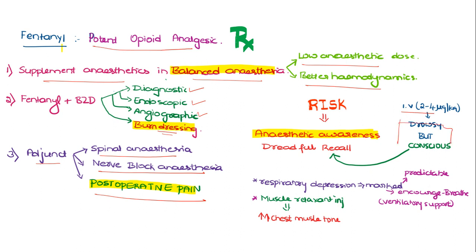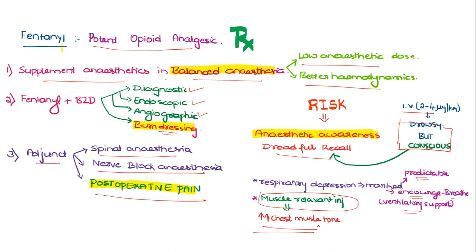The main drawback is it produces drowsiness but the patient remains conscious, thereby leading to the risk of anesthetic awareness, which is a dreadful recall. Apart from that, fentanyl has marked respiratory depression — this depression is predictable in nature and the patient can be encouraged to breathe on command, but it requires ventilatory support. It also produces chest muscle rigidity, requiring the administration of muscle relaxant injections.